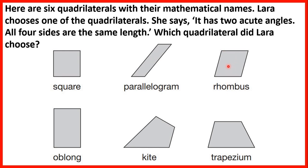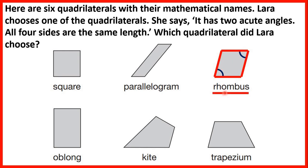So let's look at the rhombus. With a rhombus, all 4 sides are the same length, and we have 2 acute angles — 2 angles that are less than a right angle. So because we have 4 sides of the same length and 2 angles which are acute, we know that Lara must have chosen the rhombus.